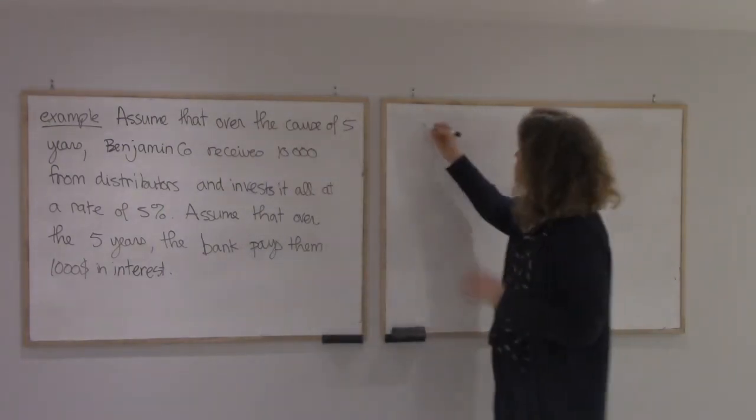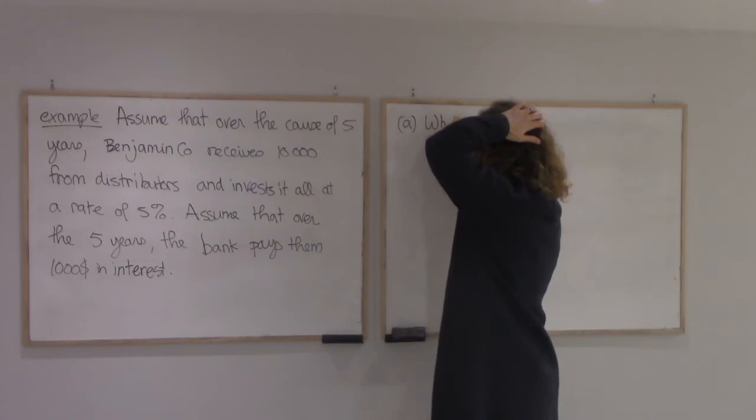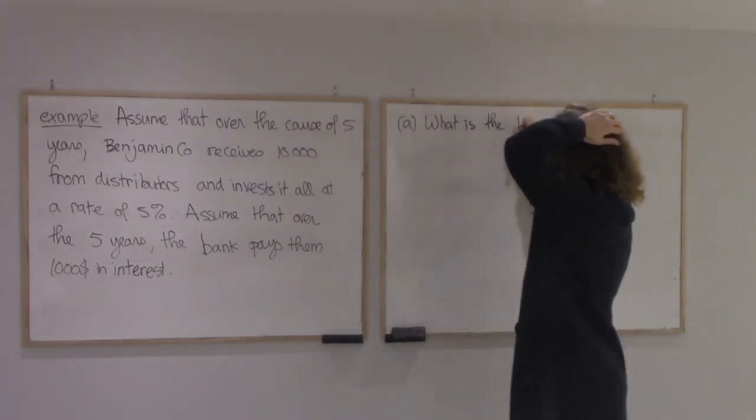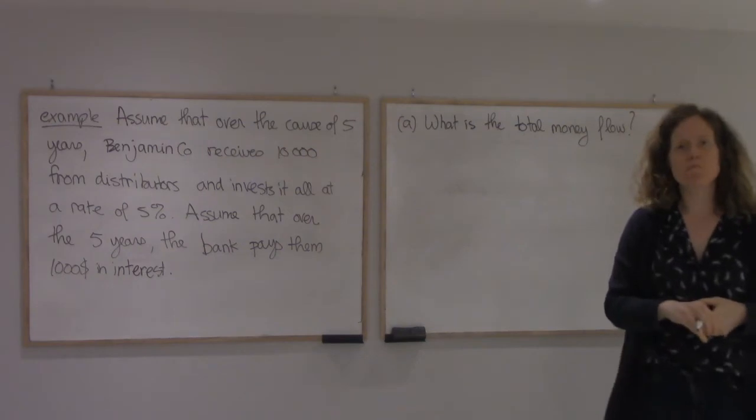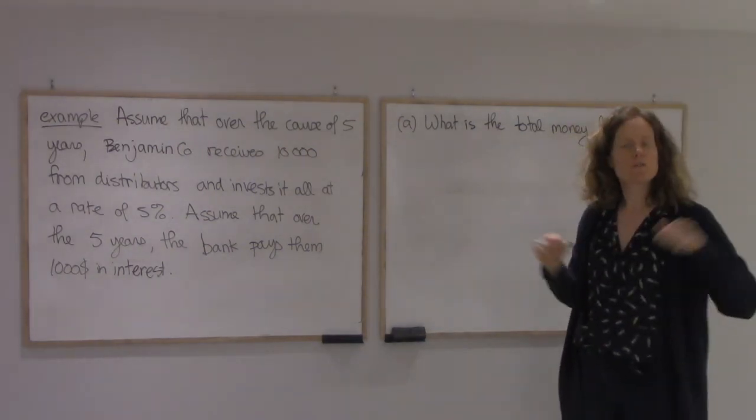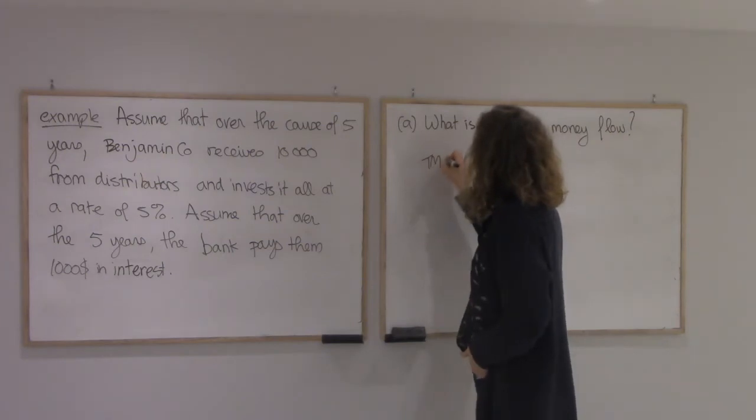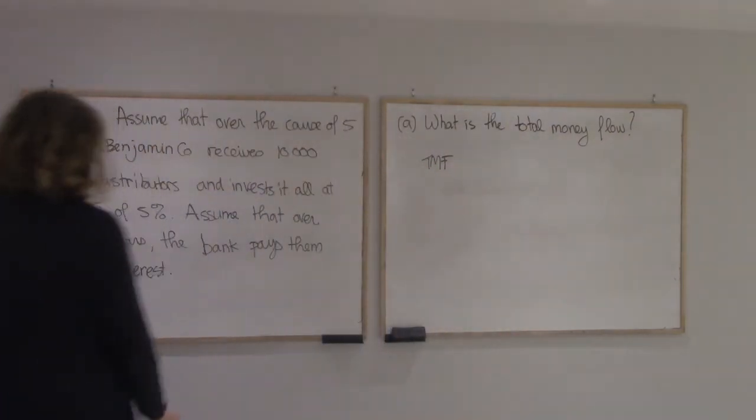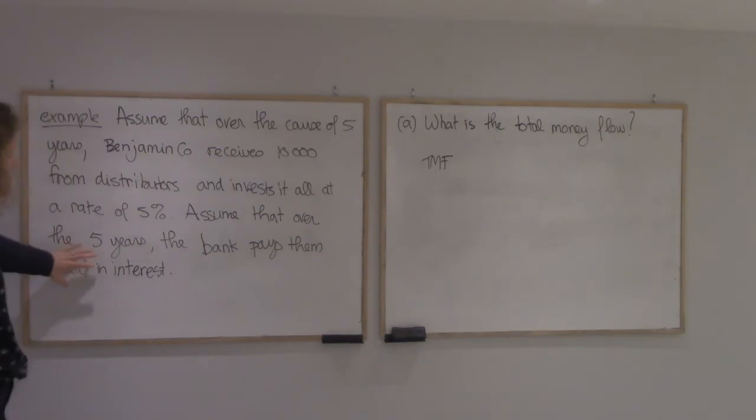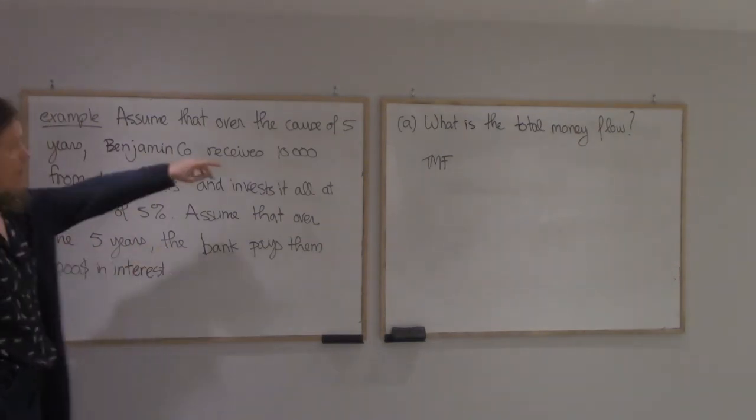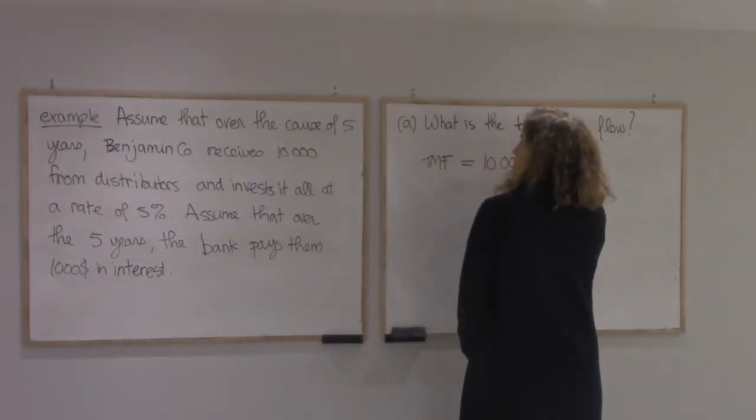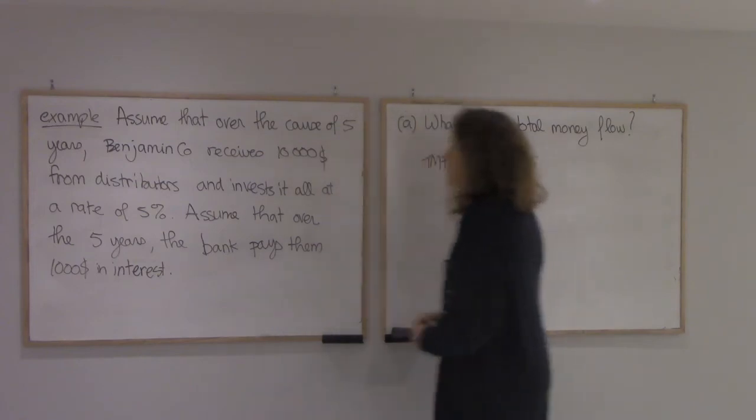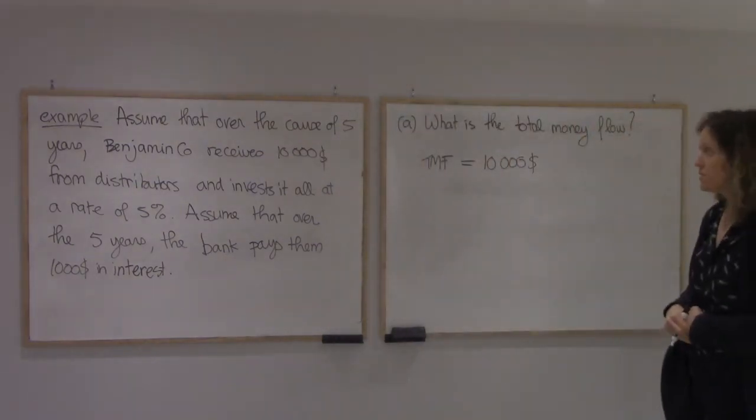Alright, so let's start with total money flow. Remember, total money flow is the money coming in, no interest counted. The $1,000 is definitely not counted because that's interest. So the only thing that they receive is $10,000. So the total money flow is $10,000, that's it.